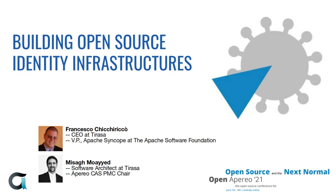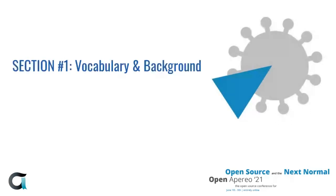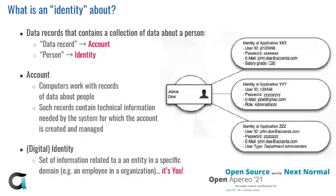Let's start by establishing some common ground and vocabulary. When we say identity, what are we talking about? It's something present in every system we interact with. We have accounts and we have identity. The most important thing is to understand the difference: an account is what computers deal with — information stored somewhere — and each account represents only a portion, only a view of the overall identity. Identity, conversely, is the composition of the partial views constituted by accounts.